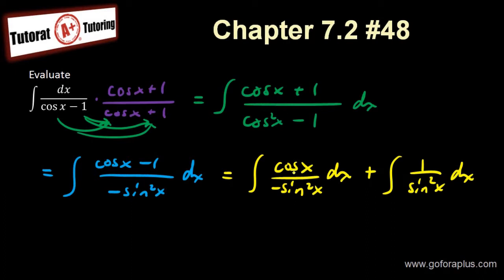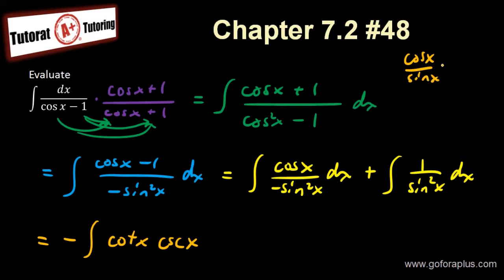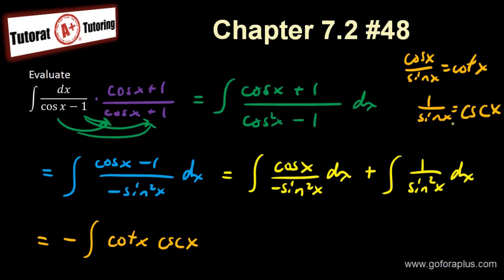I know that cos over sine is cotangent, and I know that 1 over sine is cosecant. So this is going to be the negative of the integral of cotangent x times cosecant x — because cos x over sin x is cotangent x, and 1 over sin x is cosecant x — plus the integral of cosecant squared x dx.